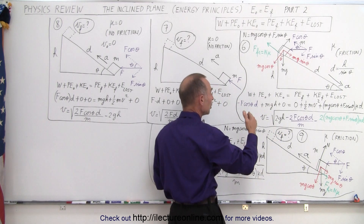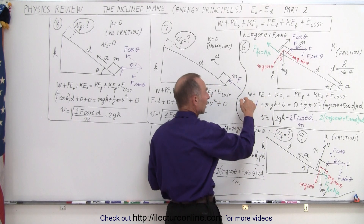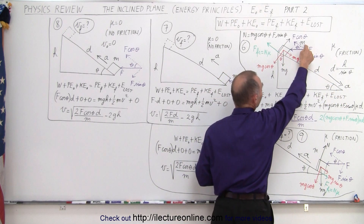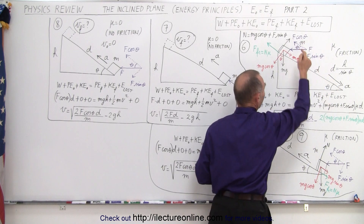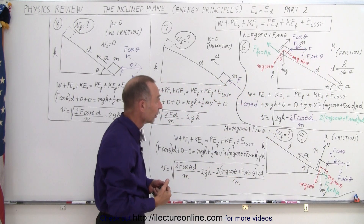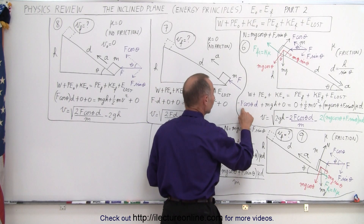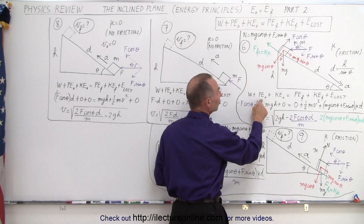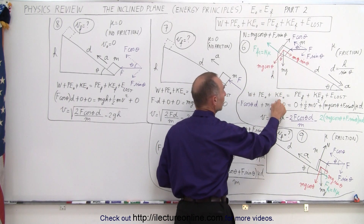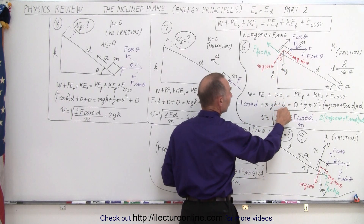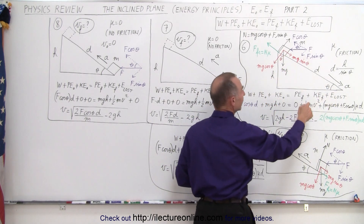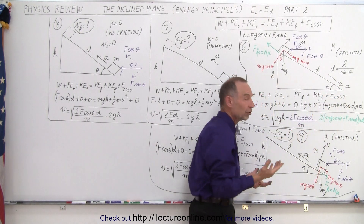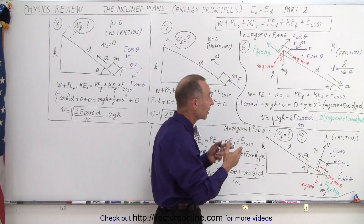Now we go ahead and plug in what we know. Work put into the system will be negative because the motion is downward while the force is acting upward. It's the component parallel to the surface that we're interested in, which is f times the cosine of theta. So the work done will be negative f cosine theta times the distance traveled. The initial potential energy starting at the top will be mgh, and there's no kinetic energy if we start from rest.